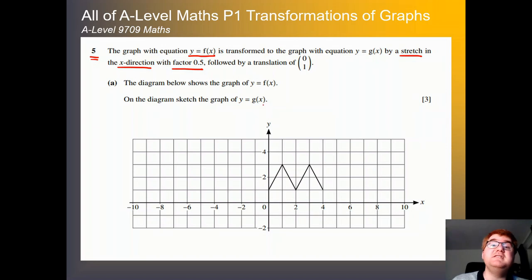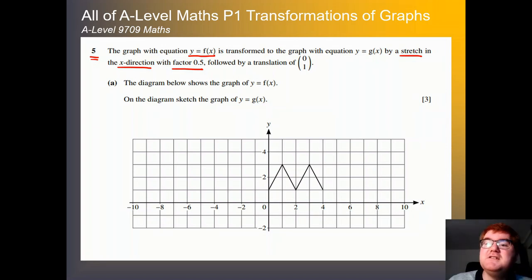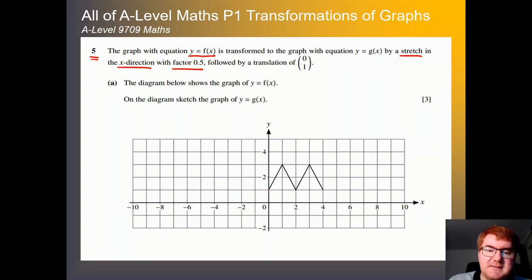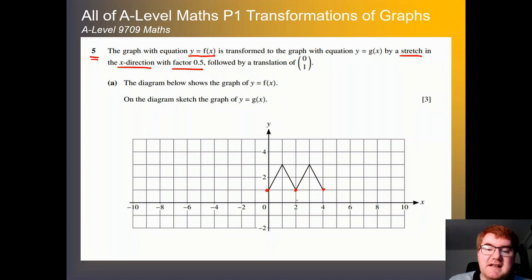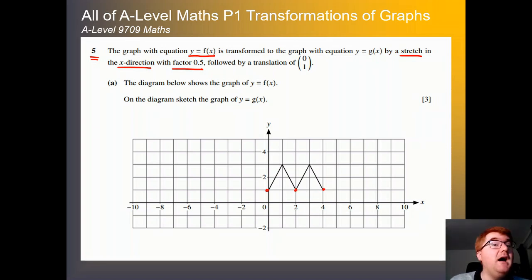The key thing here is to follow the instructions in the correct order. The first thing is a stretch in the x direction with factor 0.5. Let's look at these points. We need to consider the x coordinate — hence the x direction. Here we're at x equals 2. If we do the factor of a half, a half of 2 is 1. So this point will transform itself.